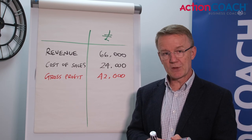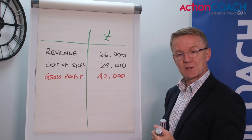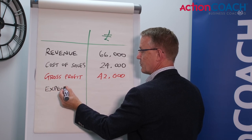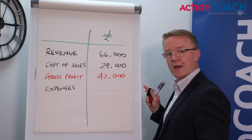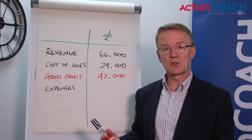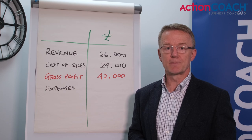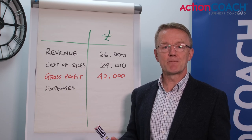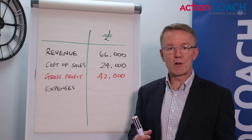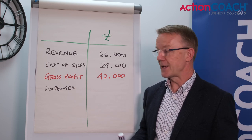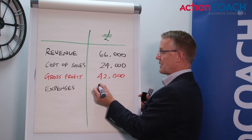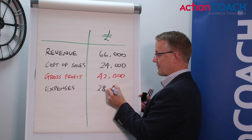Now from this money you will then start to pay your expenses in business. Sometimes you might hear people referring to this as overheads. These are all the fixed costs in your business that you have to pay regardless of whether you sell any products or services — things like your rent, your wages, your insurance, your mobile phone, your IT, all of those kinds of things. They belong in expenses. And in this particular business the expenses are £28,000.